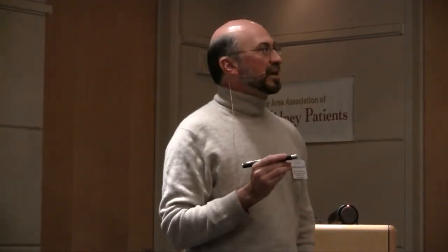To review how organ attribution works under UNOS rules: you receive one point per year of waiting time. Most other centers also factor in HLA matching, giving one point per match at the DR locus. In this region, where waiting time is around eight years, the wait time remains the driving factor. But in regions where waiting time is only one year, the list becomes very unpredictable, as matching points can easily outweigh a short wait.